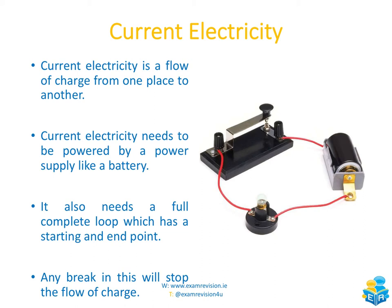Current electricity, on the other hand, is a flow of charge from one place to another — not a build-up in one place. Current electricity needs to be powered by a power supply, such as a battery. It also needs a full, complete loop with a starting point and an end point. At any point if there is a break along the circuit the flow of charge will stop, so it has to be a continuous loop.